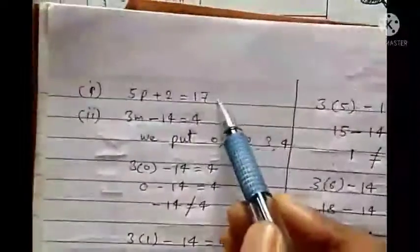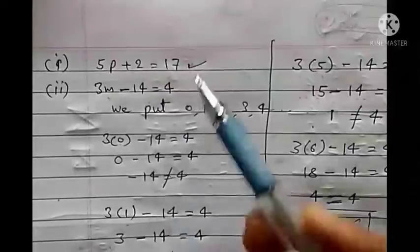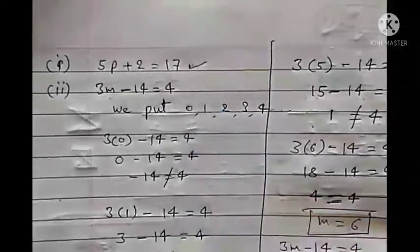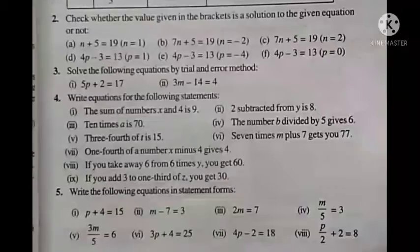Similarly, for the first question, you have to solve it yourself by putting 0, 1, 2, 3, 4 and so on, until both sides equal 17. Okay, now question number 4.